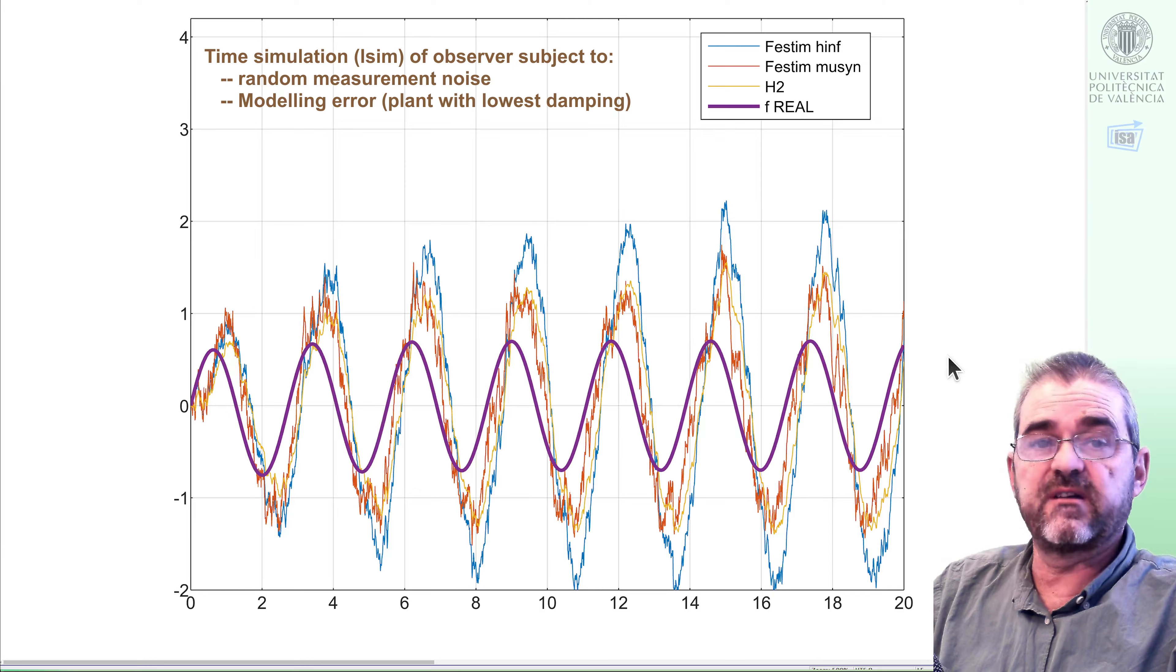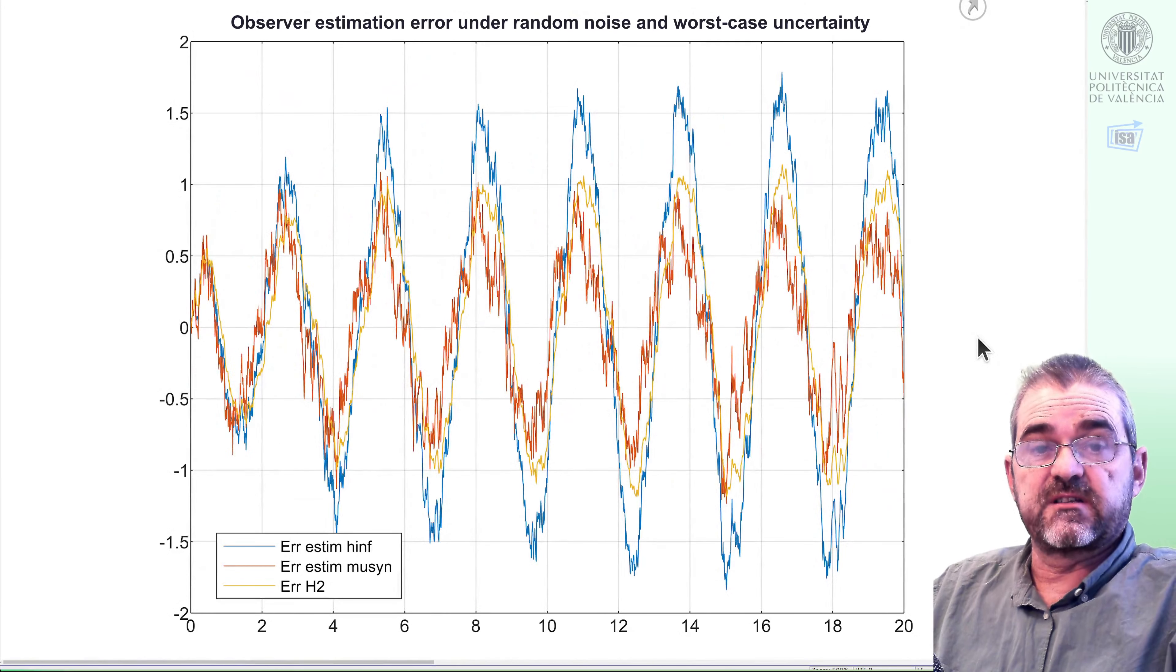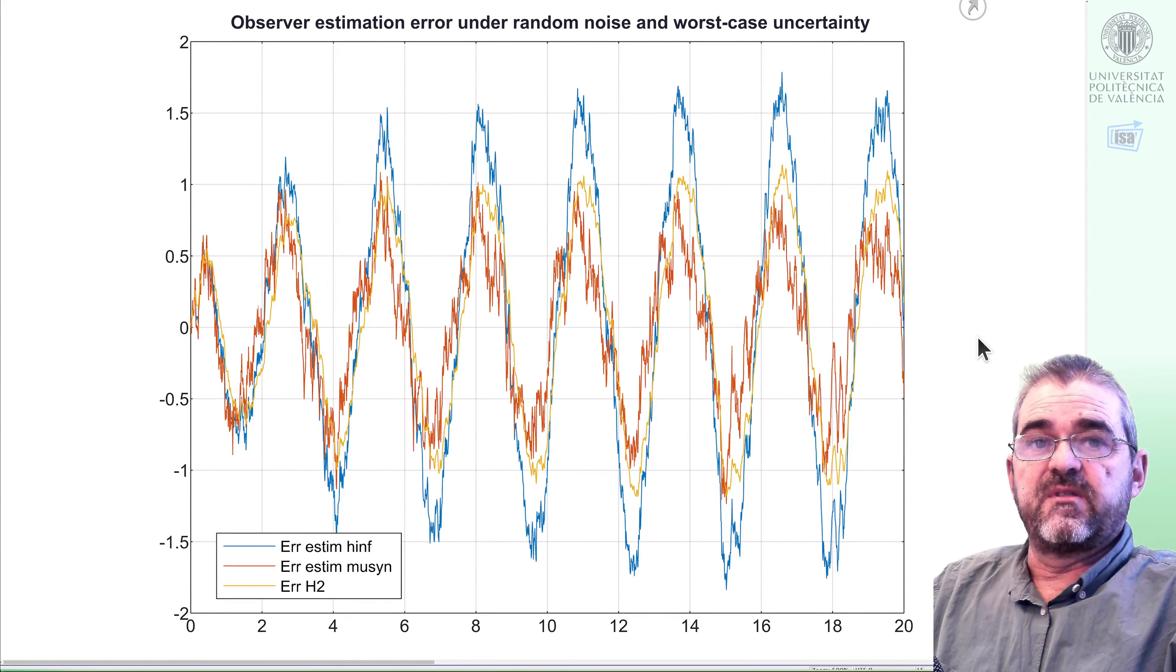If we plot the errors, we see that in these worst case stuff that mu synthesis tries to minimize under modeling errors, then the amplitude of the observation error of the H infinity is sort of double that of the mu synthesis. In exchange, mu synthesis is the one that filters less the high frequency noise.